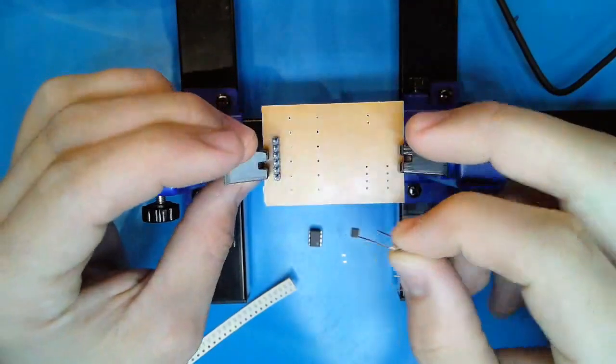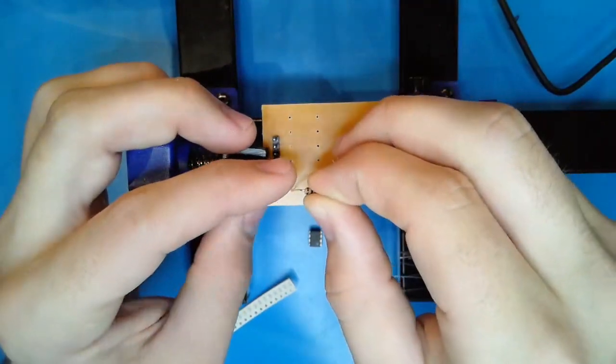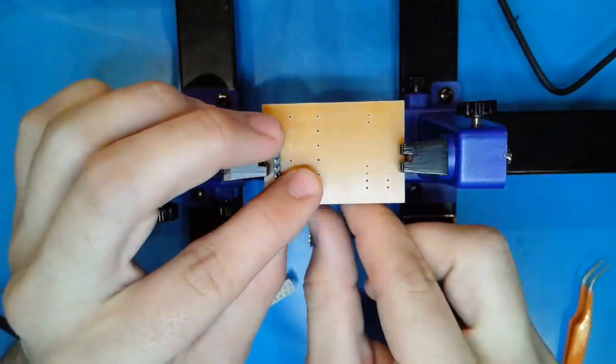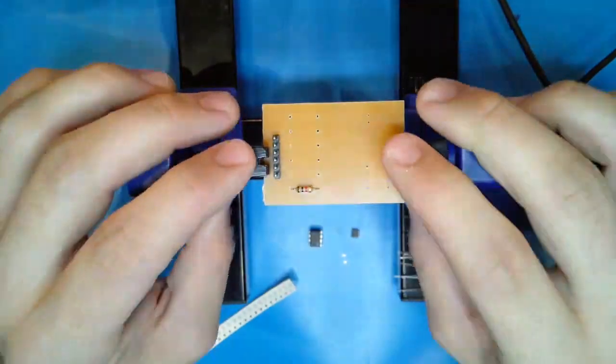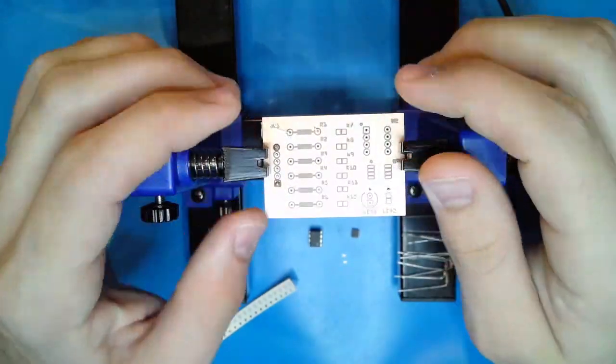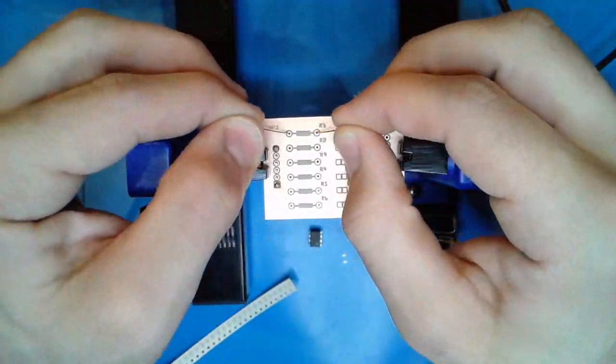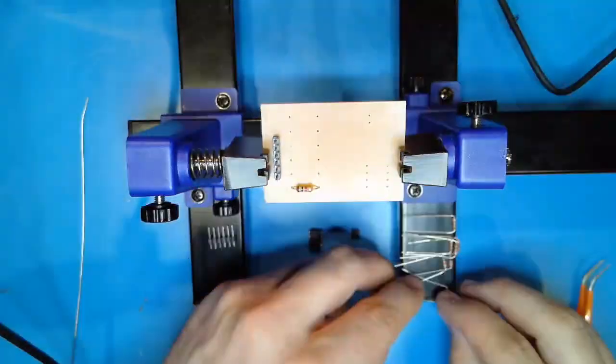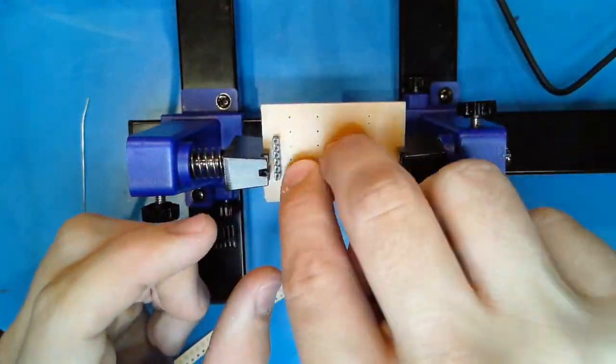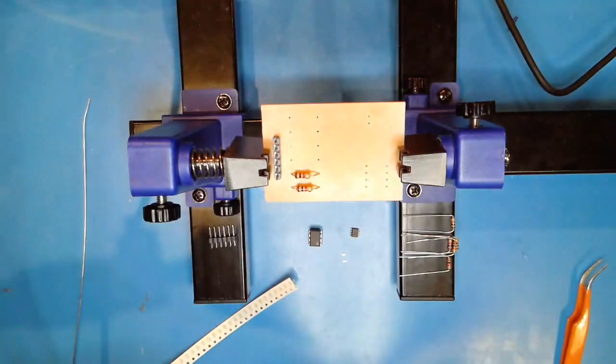The next most important thing is that the joint you are soldering should have a mechanical connection whenever possible. Before even applying solder, you should be able to flip your piece upside down, rotate it, without the joint coming undone. This will create a stronger bond in the end and will make it easier for you to achieve a properly soldered joint.